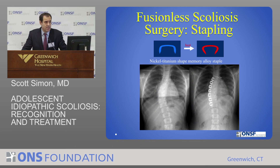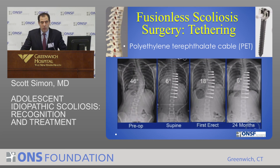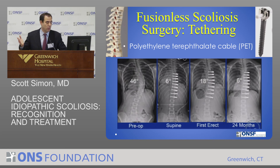Newer fusion-less procedures are now being performed. Stapling involves tethering along the convexity so the concavity can continue to grow, achieving curve correction — but stapling does not seem to work for curves greater than 35 degrees, which falls below the typical surgical threshold. A newer procedure called vertebral body tethering uses thoracoscopically inserted screws placed into the vertebral bodies with a cable connecting them; compressing the cable corrects the deformity while allowing the concavity to grow. Preliminary studies show good correction without fusion, but long-term studies are still needed.